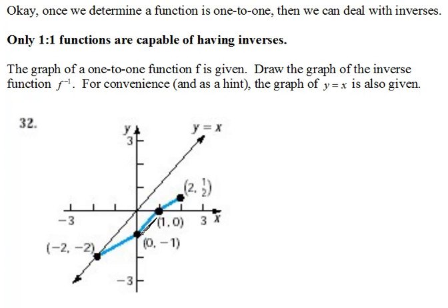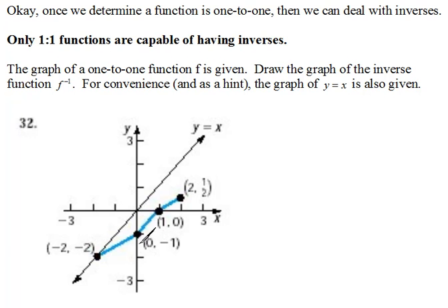Here we have a drawing of a function. This passes both the vertical and the horizontal line test. So this blue line here is in fact a function — a 1-to-1 function. So that means it has an inverse. We're going to be finding that inverse.